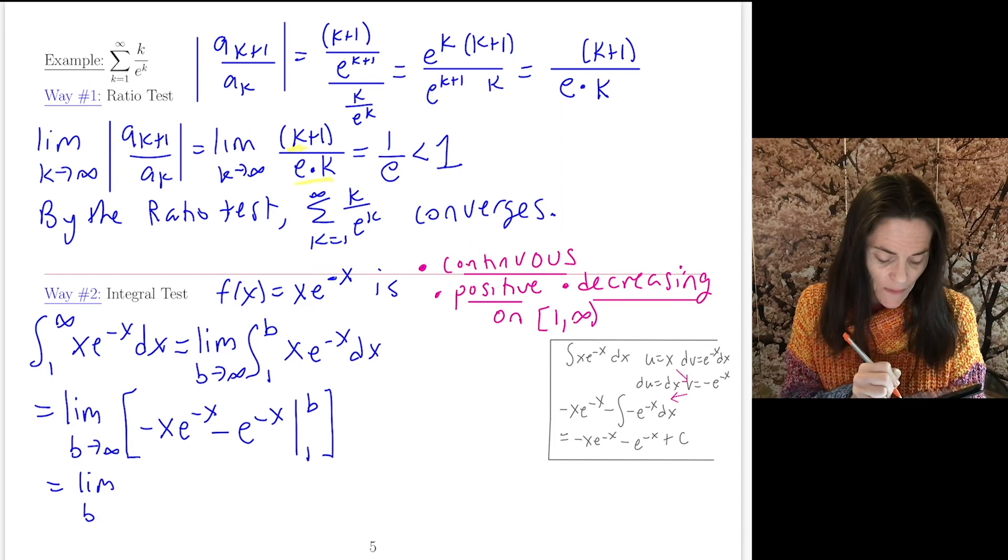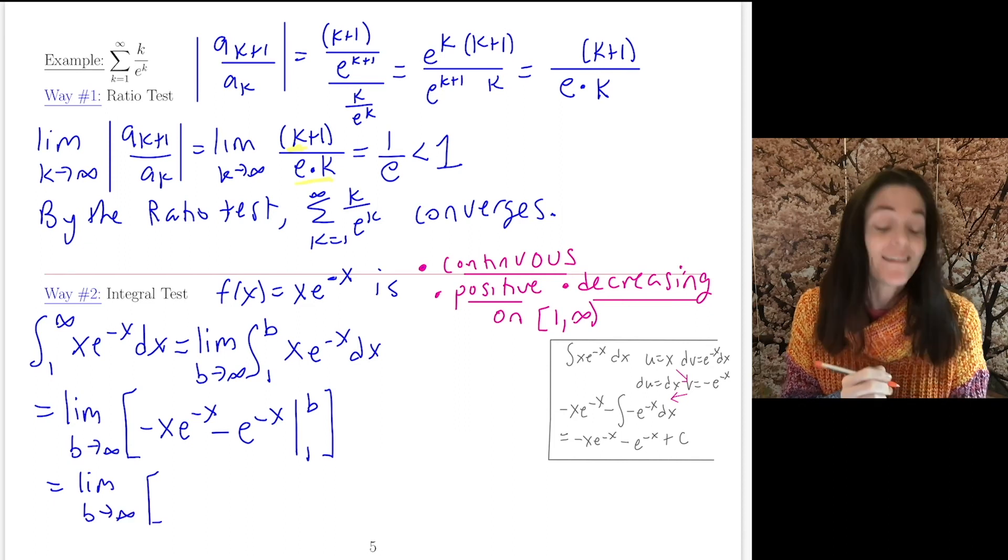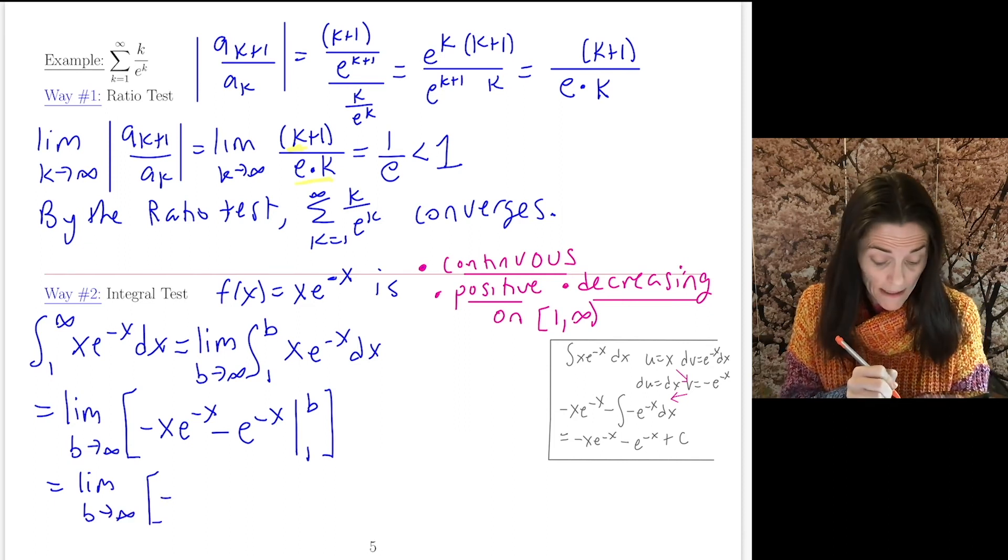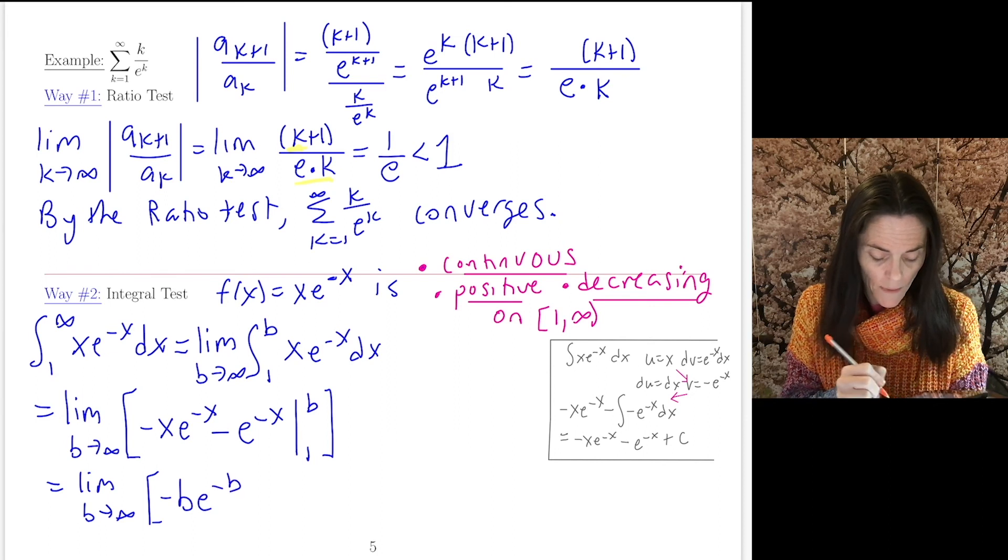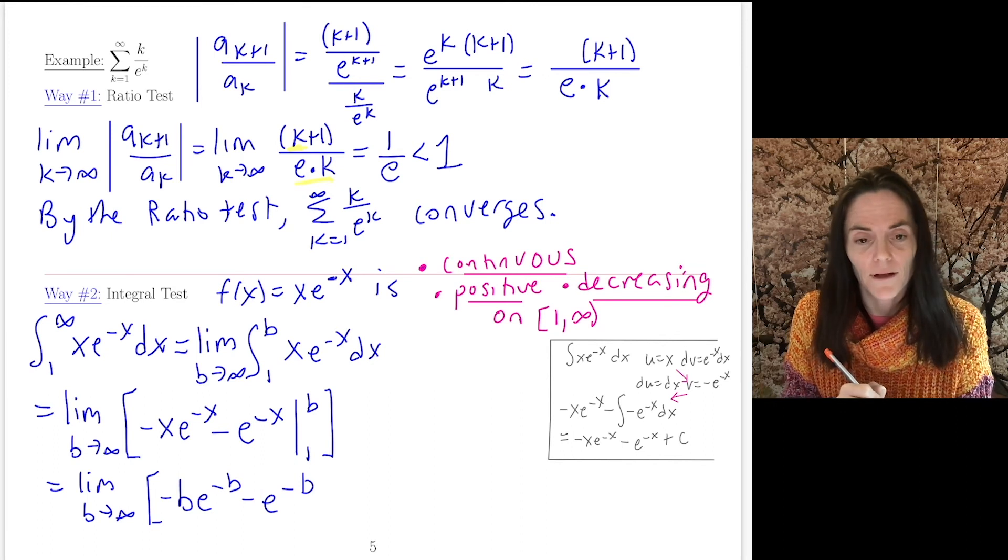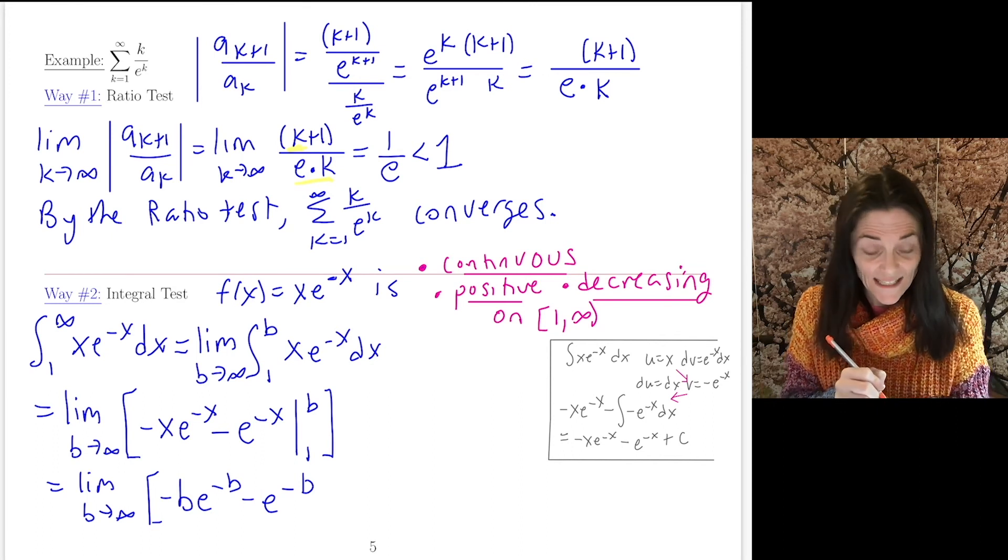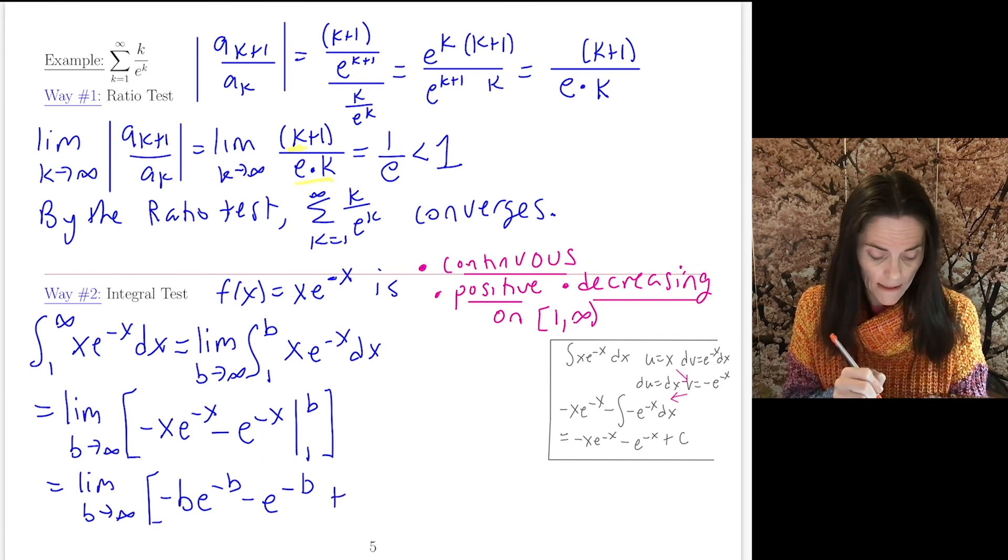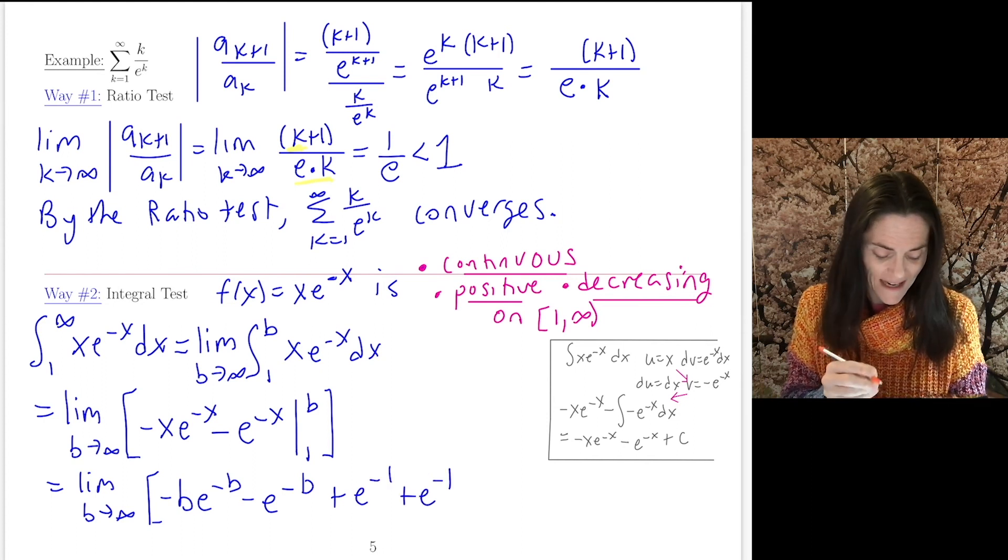This is a limit as b goes to infinity, we have -b·e^(-b) - e^(-b). Now, we are subtracting off, evaluating at 1. So we have +e^(-1) and another +e^(-1).